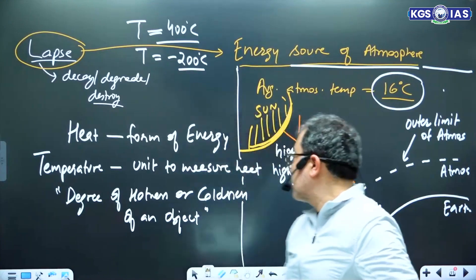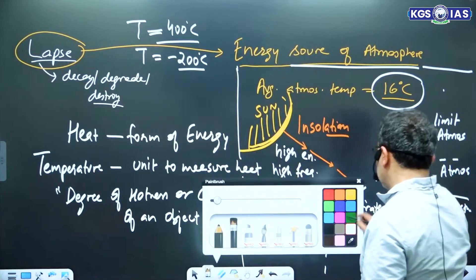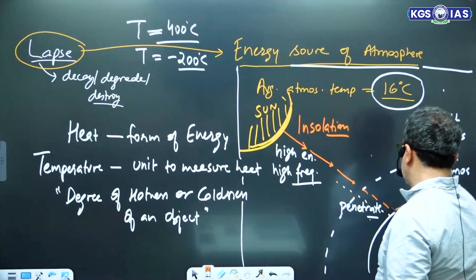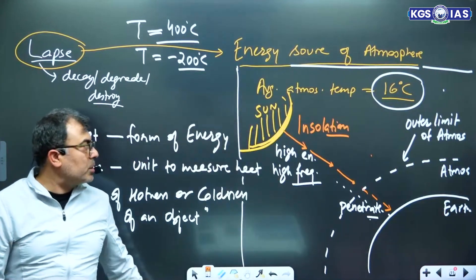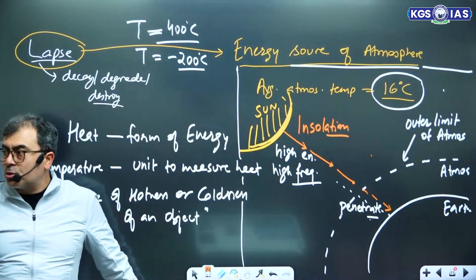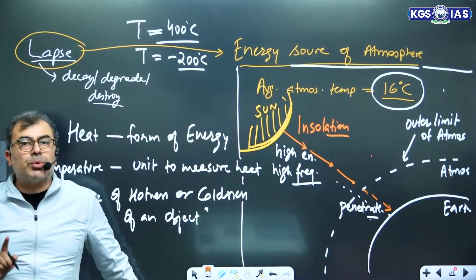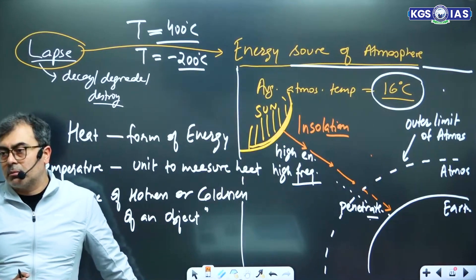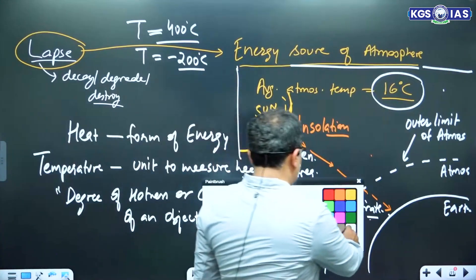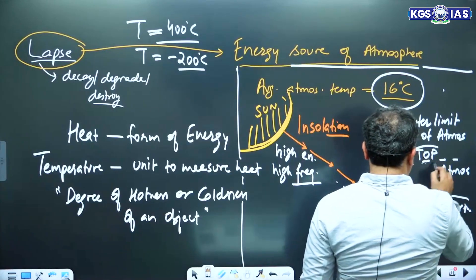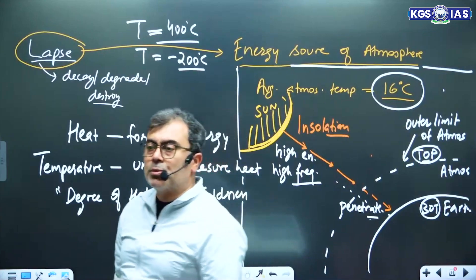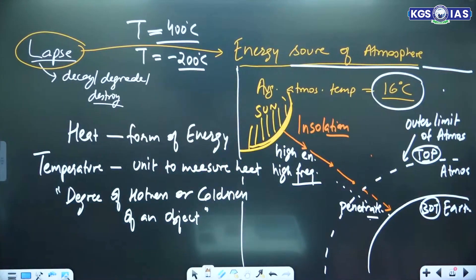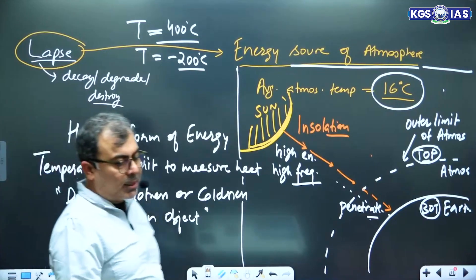Insolation will penetrate the atmosphere — it will not heat the atmosphere. Is the atmosphere heated by the sun? No. The ultimate source of heat is the sun, no doubt, but the atmosphere is not heated directly by the sun. This is the top of the atmosphere, and this is the bottom of the atmosphere. Is the atmosphere getting heated from the top? No — because sun rays have penetrated. Penetrate means they go through without impacting. Just like an x-ray passes through your body without you feeling heat — because it penetrates. So it is not heating the atmosphere.